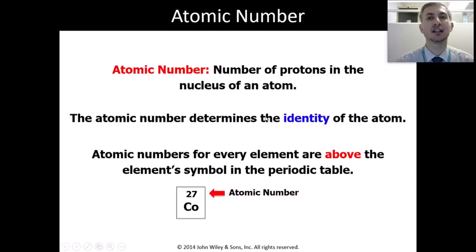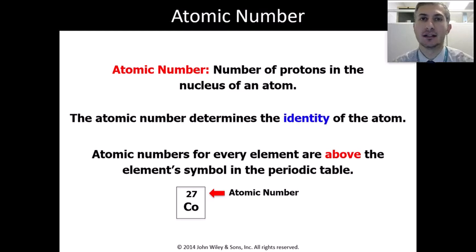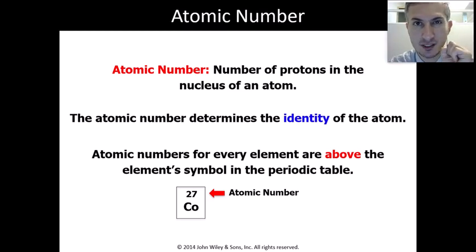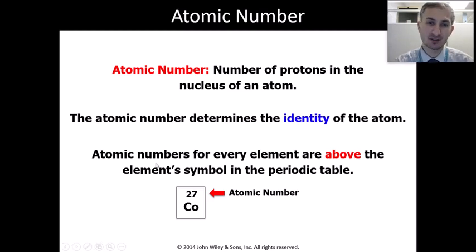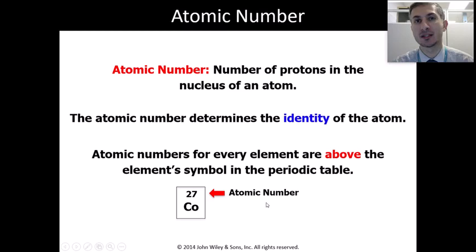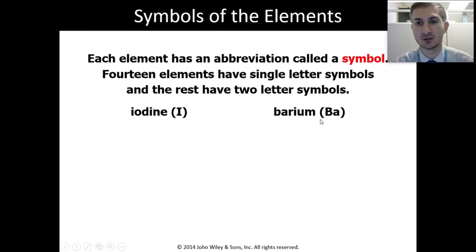Atoms are neutral, meaning the number of protons equals the number of electrons. So if you know the atomic number, you know both the number of protons and the number of electrons. For example, cobalt (Co) has atomic number 27, meaning it has 27 protons and 27 electrons. Knowing the atomic number gives you two pieces of information.